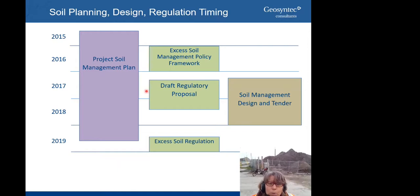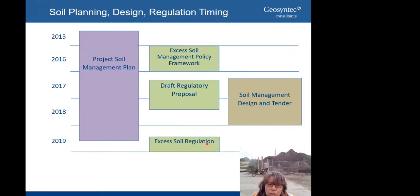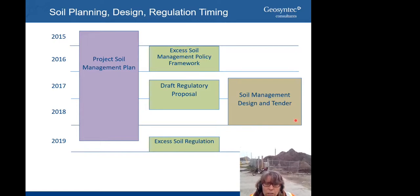Looking back through the whole process: the Soil Management Plan started in 2015, working through several drafts, with the final version in 2019. All the while, the MECP was working through their framework for the regulation — with the Excess Soil Management Policy Framework in 2016, the draft regulatory proposal in 2017–2018, and then finally the Excess Soil Regulation promulgated in December 2019. Alongside that, detailed design ran through 30%, 60%, 90%, 100%, issue for tender, issue for construction, so that construction could start in 2019. You can see the real need to integrate where the Ministry was heading with their excess soil regulation into the soil management plan and the detailed design.